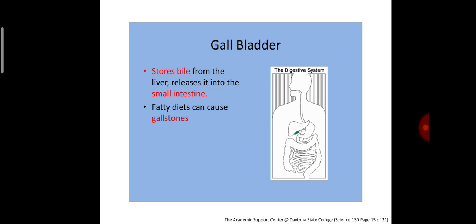The pancreas secretes pancreatic juice that can change starch into simple sugars and proteins into simple compounds called amino acids.